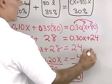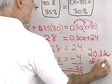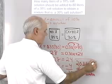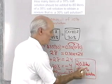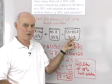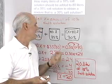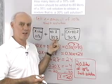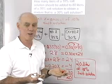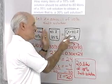The answer to this problem is 20 liters of 10% salt solution. We can check: 20 liters at 10% plus 80 liters at 35% gives 100 liters total. 30% of 100 liters is 30 liters of salt. The amount of salt in both original solutions combined equals the salt in the final solution, confirming our answer.